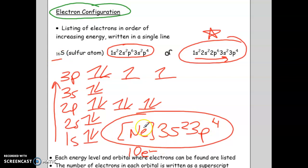So it's like neon's configuration plus there's 3s23p4. Now when you're asked to do the electron configuration, I'm always asking for the full thing, not the abbreviation.